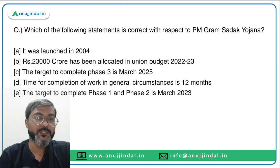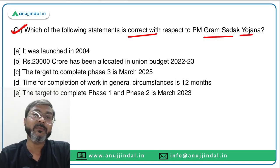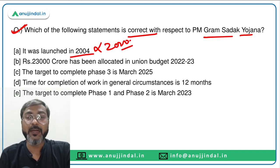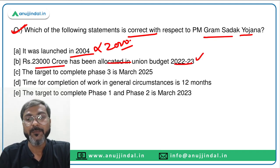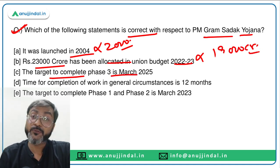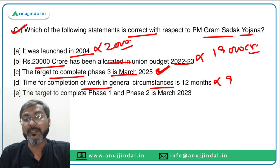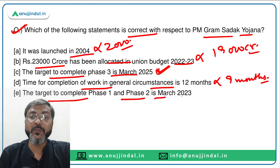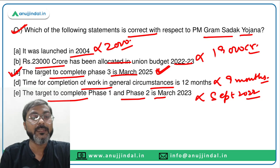Practice question: Which of the following statements is correct about PM Gram Sadak Yojana? Option A — launched in 2004: Incorrect, it was launched in 2000. Option B — ₹23,000 crores allocated in budget 2022-23: Incorrect, it is ₹19,000 crores. Option C — target to complete Phase 3 is March 2025: Correct. Option D — time for completion in general circumstances is 12 months: Incorrect, it is 9 months. Option E — target for Phase 1 and 2 is March 2023: Incorrect, it is September 2022. Answer: Option C.